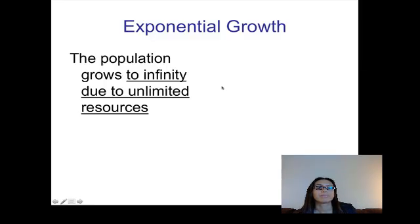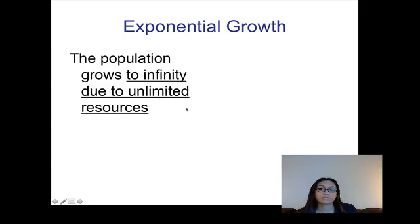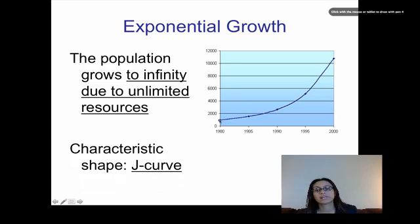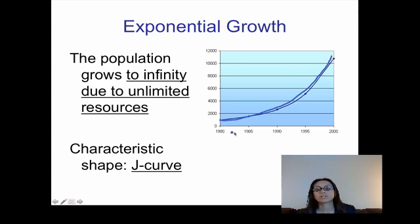There are two different types of growth you need to know about. The first is exponential growth. With exponential growth, a population grows to infinity — it just keeps growing bigger and bigger — and this is due to having unlimited resources. On a graph, a population growing exponentially produces what we call a J-curve. The population just keeps growing. Over time, the number of individuals keeps increasing. According to this type of growth, the population would grow on to infinity and never stop growing.